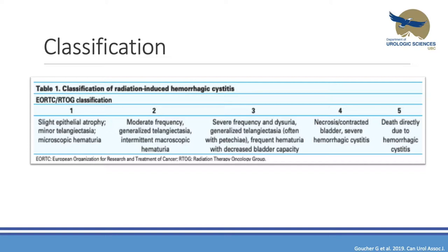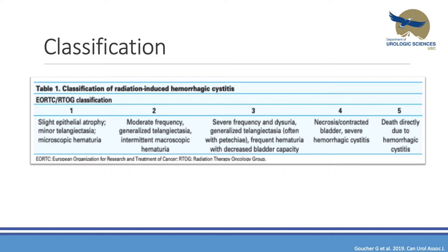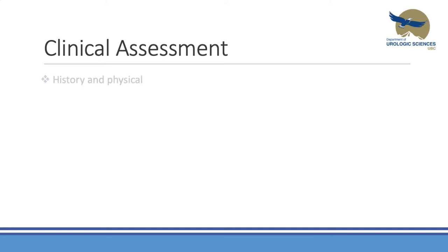It's important to understand grading of hemorrhagic cystitis. The most commonly used classification in literature is the RTOG/RTCOG classification, which I'll reference throughout today. When these patients present to us, they're typically in the grade three to four range; sometimes we're fortunate and they come in at grade two where CBI quickly resolves the situation, but unfortunately lately we've seen more grade three and four presentations, which can be quite challenging.